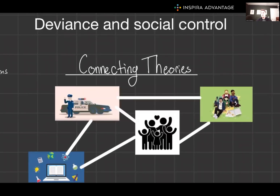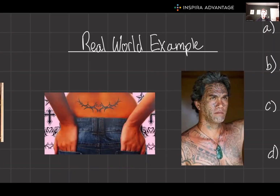Let's connect these theories to social control. Understanding these theories provides insights into the mechanisms of social control. Societies and their institutions react to deviance based on these underlying principles, shaping policies and interventions. Whether through reinforcing norms or addressing the root causes of deviance, social control efforts are deeply intertwined with their understanding of why deviance occurs. Consider how tattoos are celebrated as art and identity in some cultures yet viewed as rebellious or unprofessional in others — this cultural dichotomy showcases the relative nature of deviance. Social media has also impacted deviance perception, where behaviors once considered private or taboo are now broadcast and in some cases normalized.